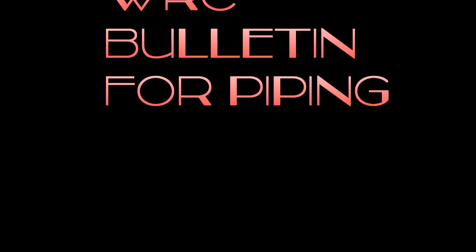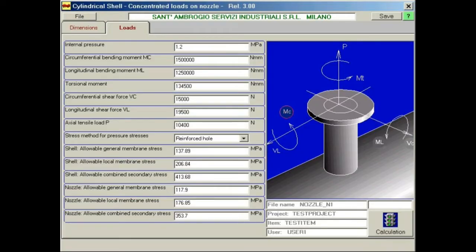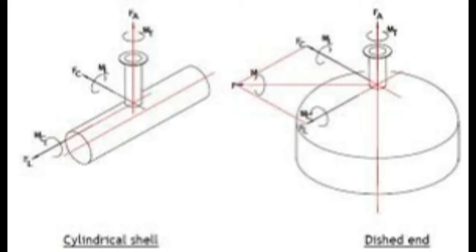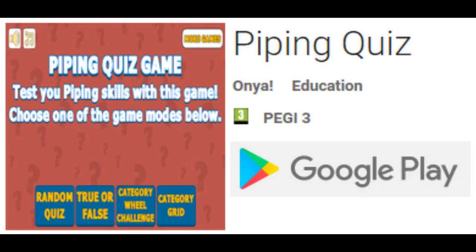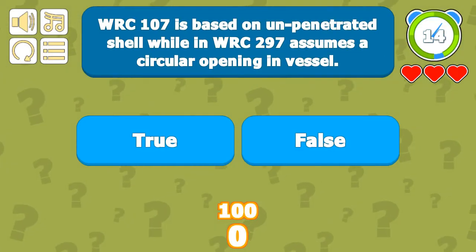Hello viewers. In this session we are going to see some questions on WRC, particularly WRC 107, WRC 297, and 537. These WRC bulletins are used by piping engineers when we have to check the nozzle flexibility and the stresses at vessels where piping is connected to static equipment like a vessel or column. We need to see the limitations imposed — the d/t ratio and t/T ratios must fall within the WRC bulletin specified limitations.